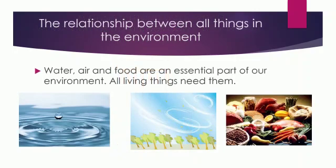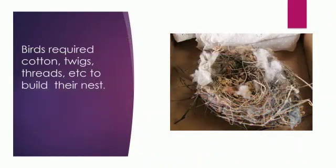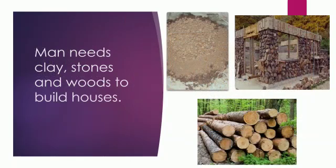The relationship between things in the environment: water, air and food are essential parts of our environment and all living beings need them. Apart from this, they also need other things which they get from the environment. For example, birds require cotton, twigs and threads to build their nests. Man needs clay, stones and wood to build houses. We also use stones to build walls, hand mills and mortar.